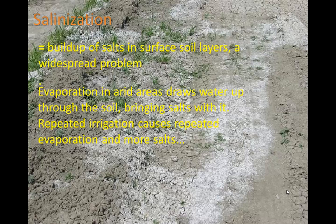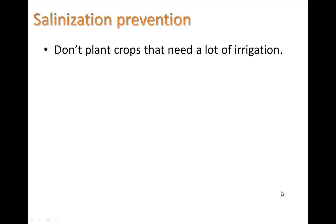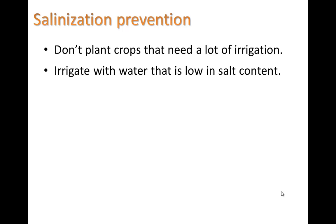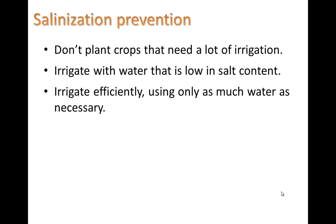How do you prevent this? You have a couple of ways. Don't plant crops that need a lot of irrigation. Or irrigate with water that is low in salt content, because some of those salts are brought in from the water. As that water evaporates, it leaves behind salts of its own and also brings up salts from deeper in the soil. Irrigate efficiently, using only as much water as necessary. These three things can help prevent salinization.